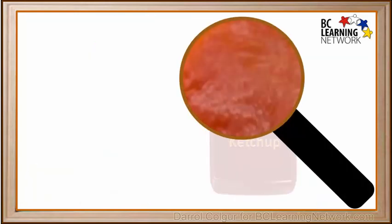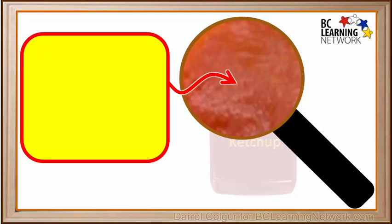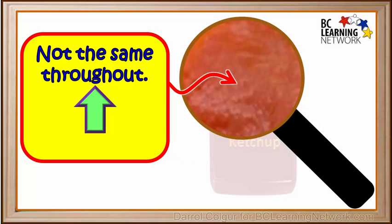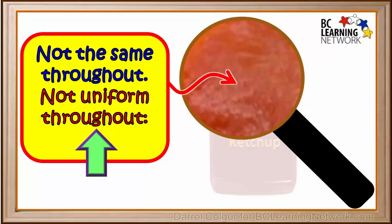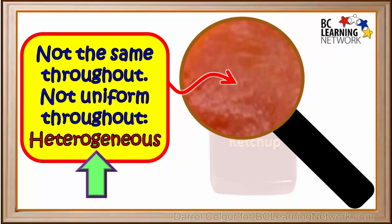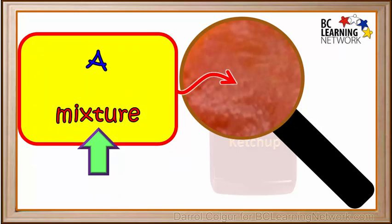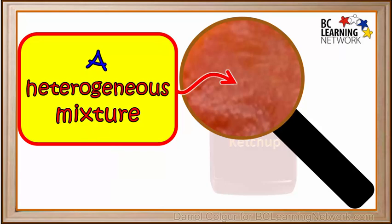Zooming in on the ketchup, we see it's much different. It is darker in some areas and lighter in some areas, with slightly different colors at different places. So ketchup is not uniform throughout. Something that is not uniform throughout is said to be heterogeneous. The ketchup is made from various ingredients, including tomatoes, sugar, vinegar, and water. Therefore, we know it's a mixture, and because it's not uniform throughout, we call it a heterogeneous mixture.